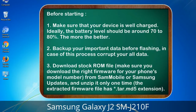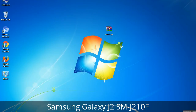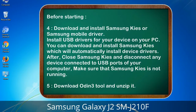3. Download the stock ROM file. Make sure you download the right firmware for your phone's model number from Sammobile or Samsung Updates, and unzip it only one time. The extracted firmware file has a *.tar.md5 extension. 4. Download and install Samsung KIES or Samsung mobile driver. Install USB drivers for your device on your PC. You can download and install Samsung KIES which will automatically install device drivers.